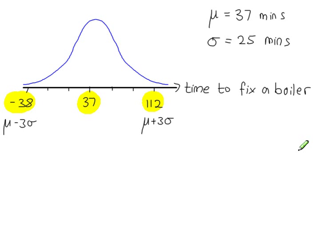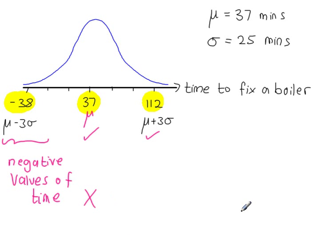Now, does that look sensible? That value there, the mean, that's good, that's fine, 37 minutes, that's okay. The mean plus 3 standard deviations, 112 minutes, that looks fine as well. But then on this side, you've got negative values of time, which obviously is absurd. You can't fix a boiler in minus 38 minutes, it makes no sense.